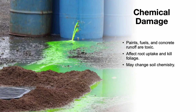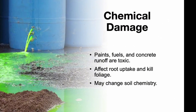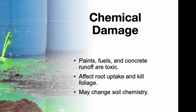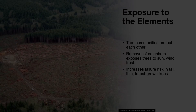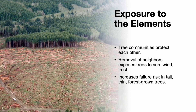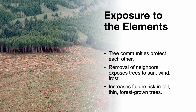Contaminants like paints, fuels, and concrete runoff are toxic to tree roots. They can alter the soil pH, affect root uptake, and kill the foliage. Removing surrounding trees also exposes interior forest trees to sun, wind, and temperature extremes, leading to sun scald or even wind throw.